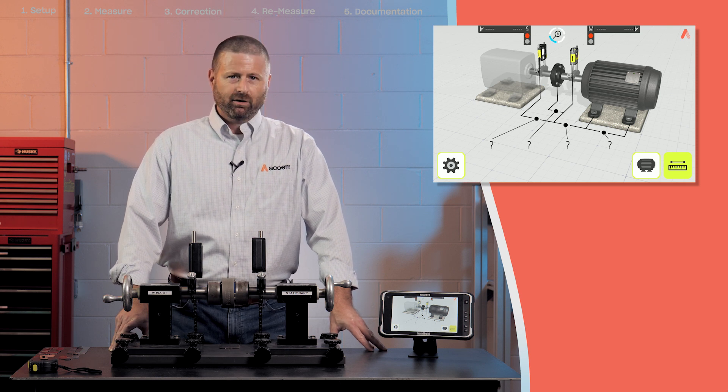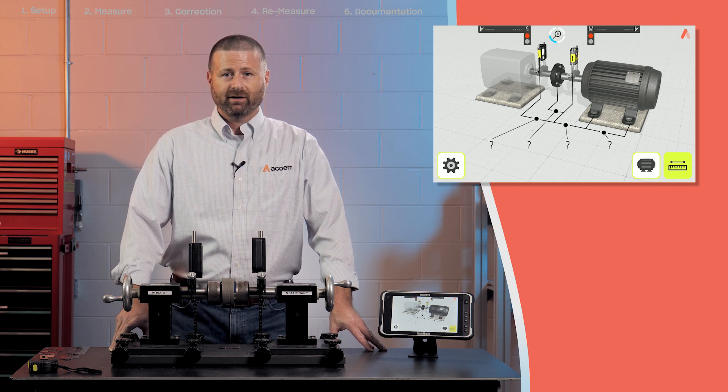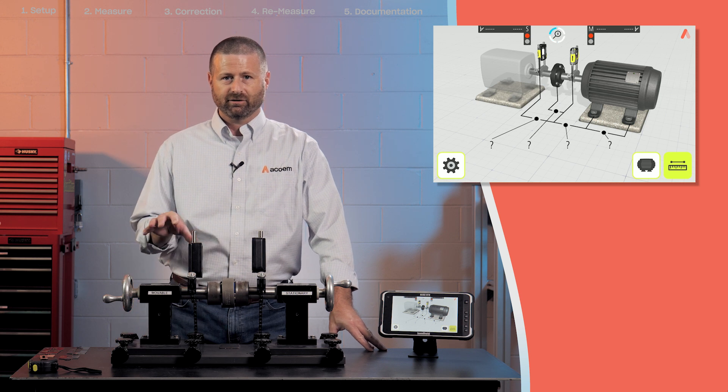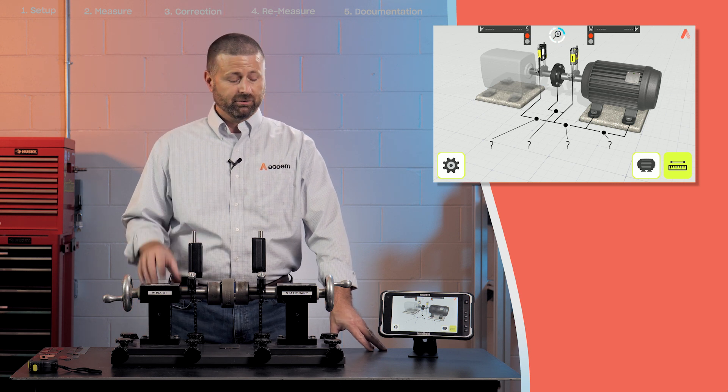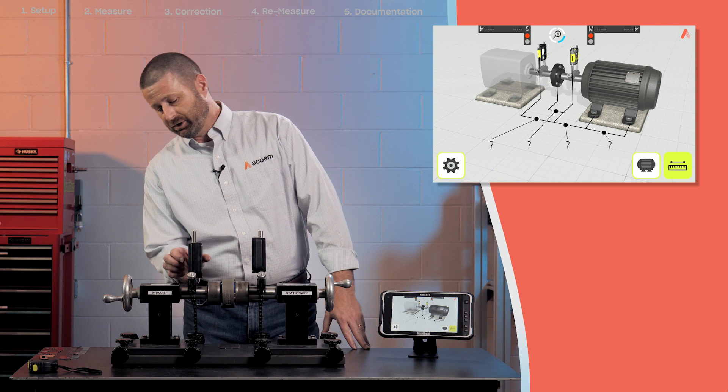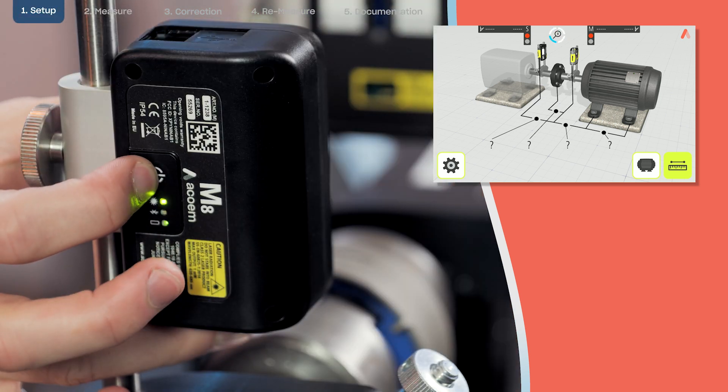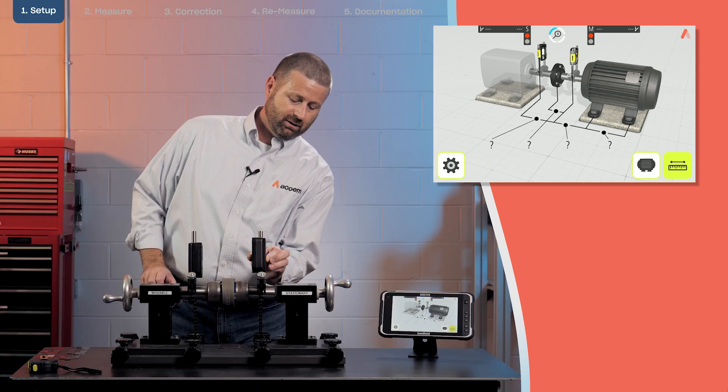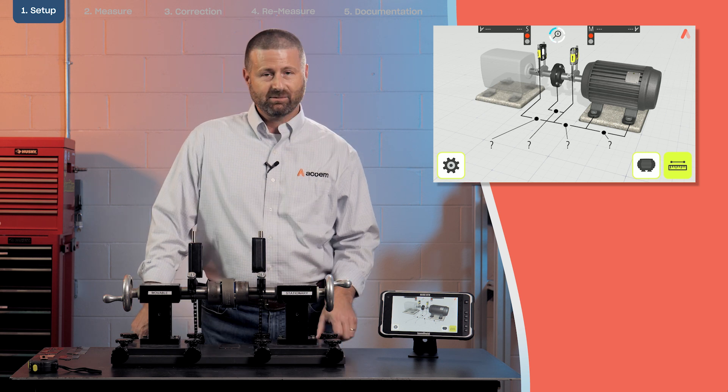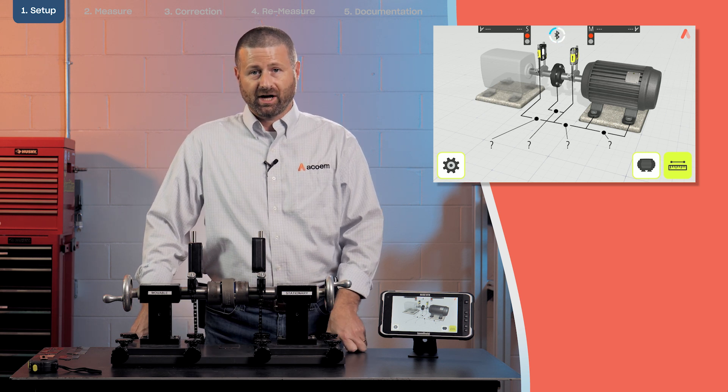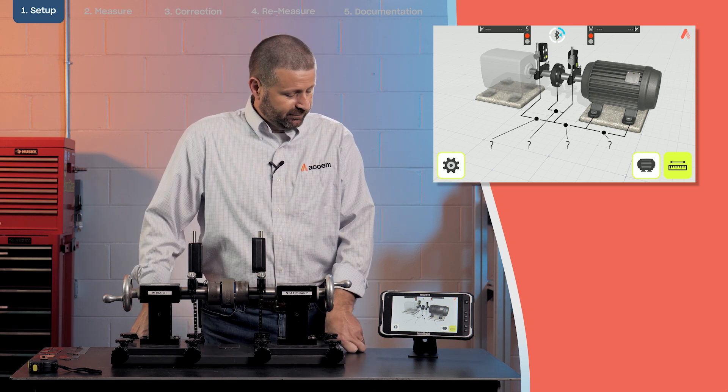The AT100 is tablet or app based and communicates with the sensors through a Bluetooth connection. So the first thing we're going to do is turn on our sensors at the same time we open the horizontal shaft alignment app on the display unit.